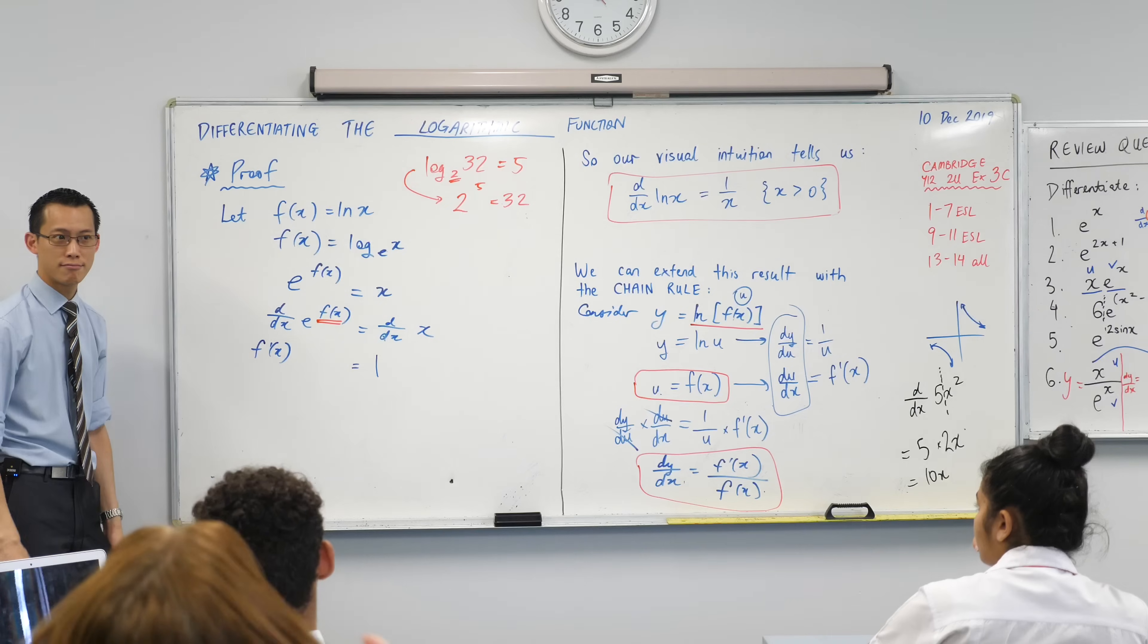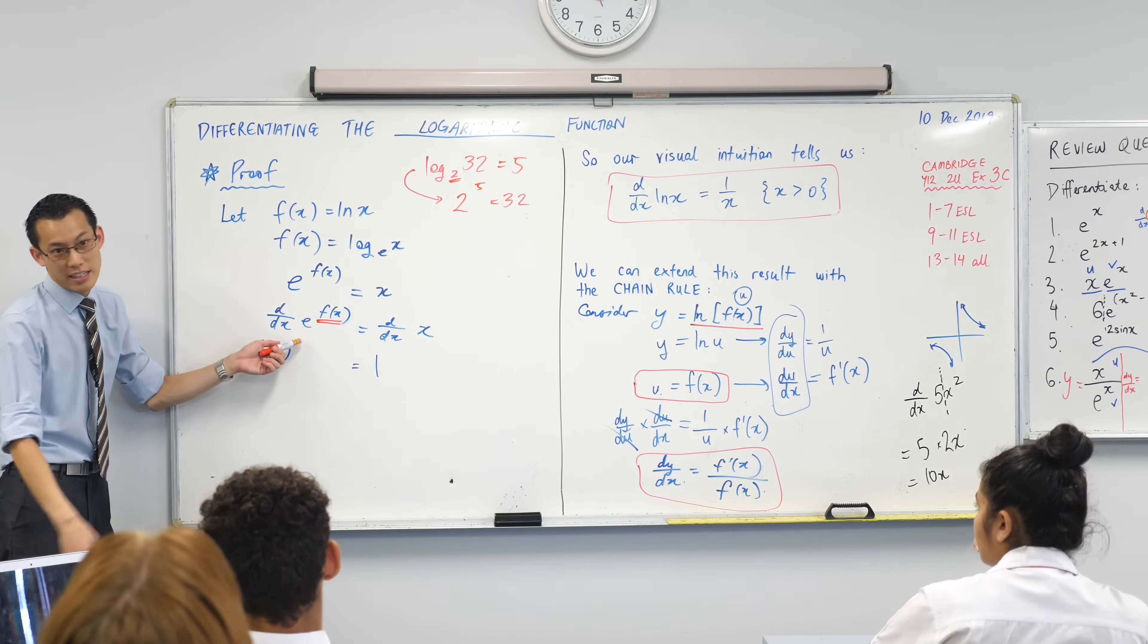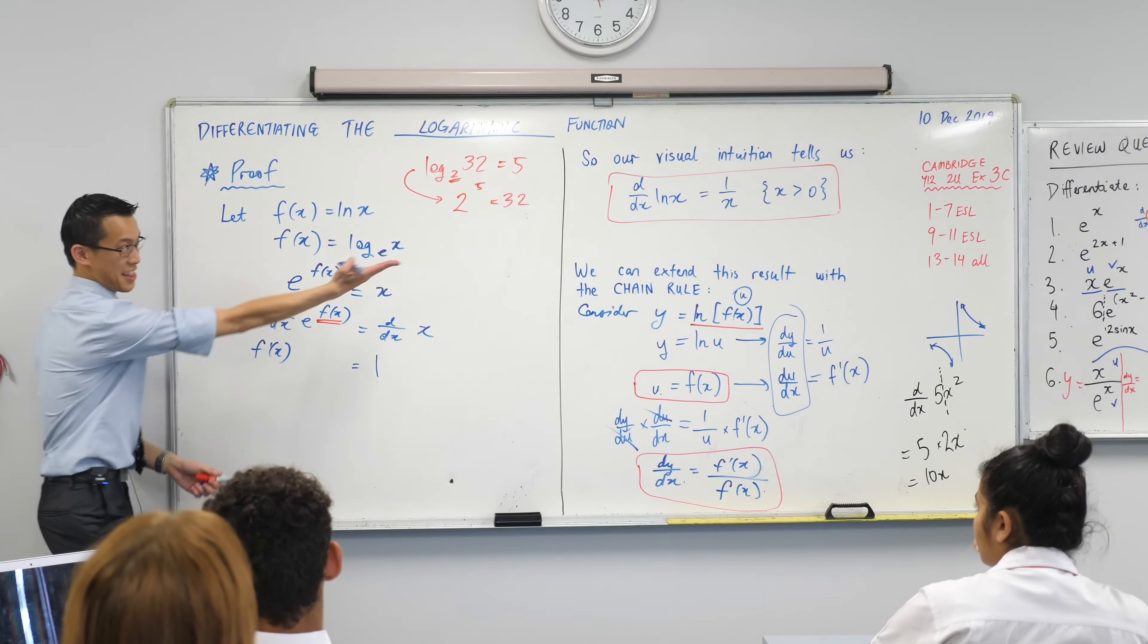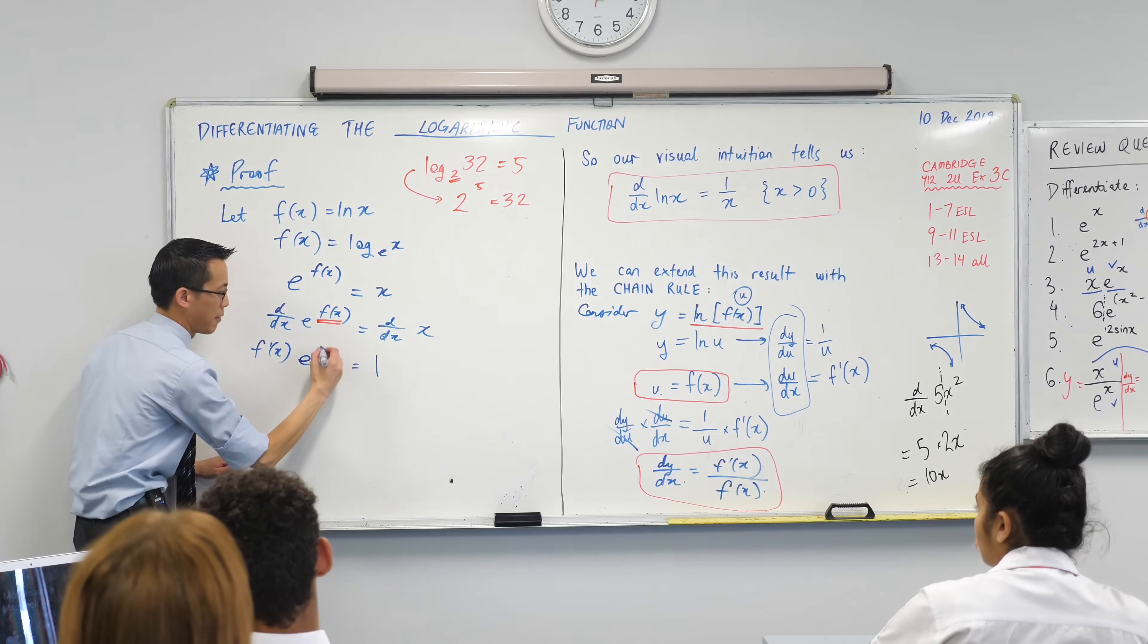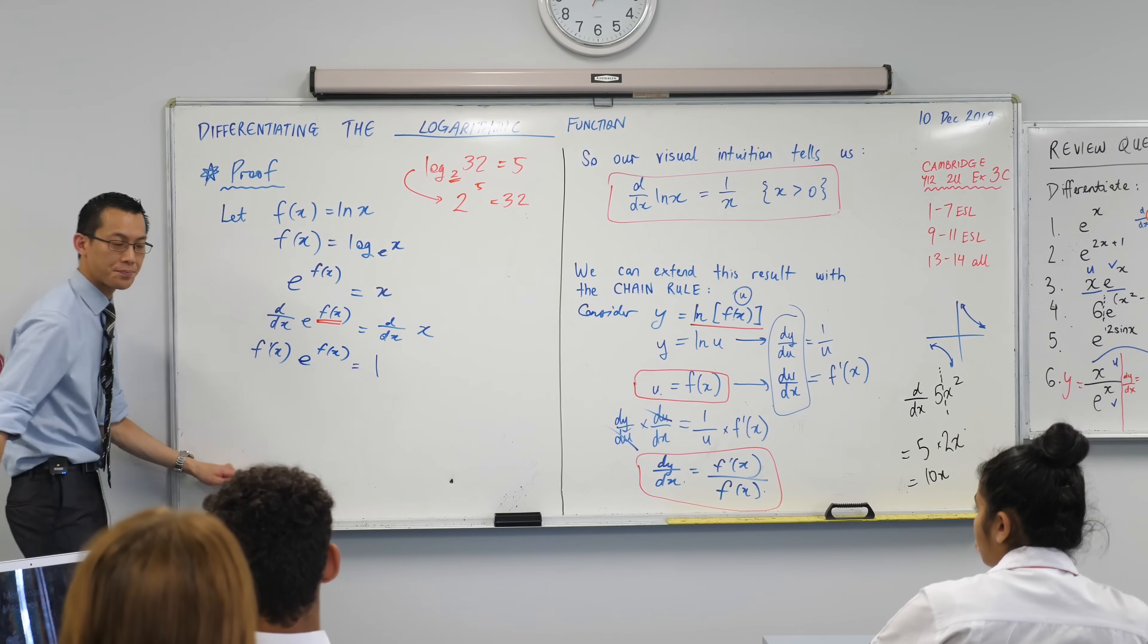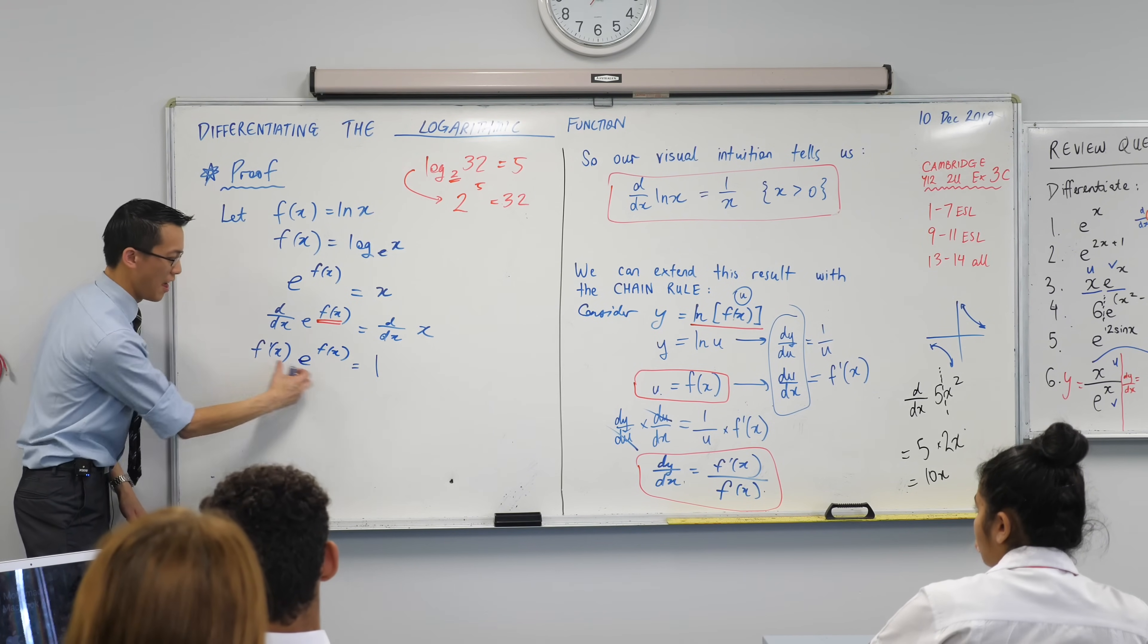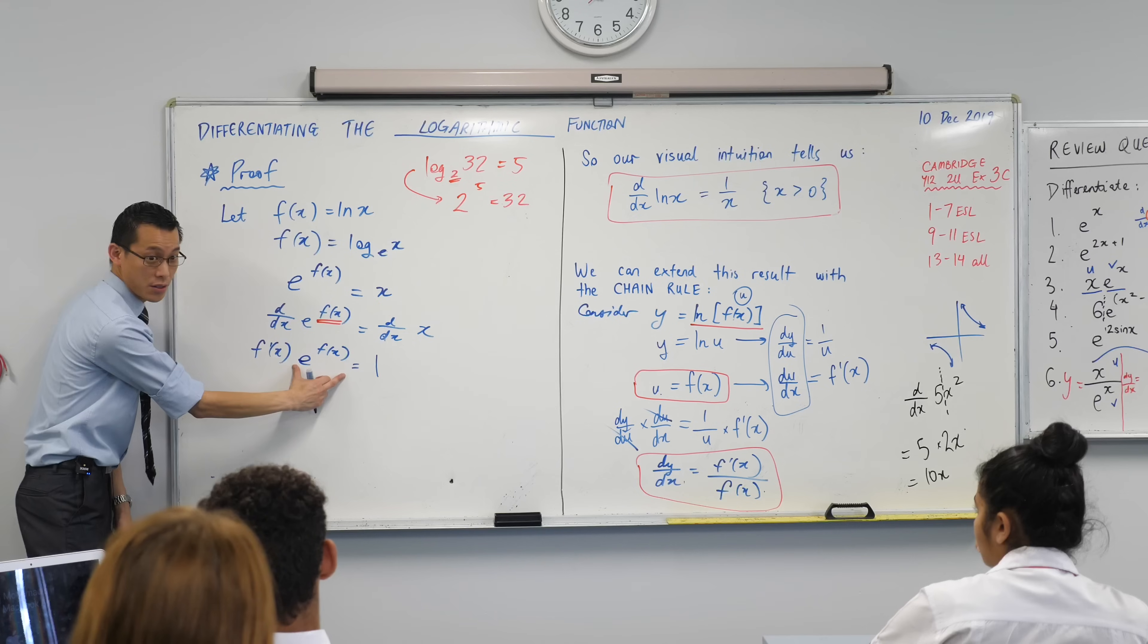What's the outside derivative? Yeah, it's just like e to the power of a thing. E to the power of a thing differentiates into the same thing. So I'm going to write the same thing: e to the f x. This is the inside derivative, this is the outside derivative.